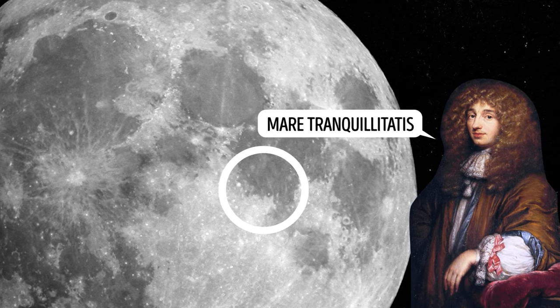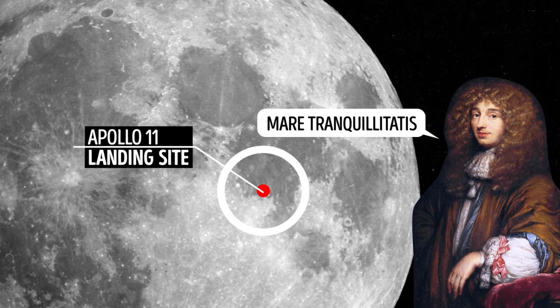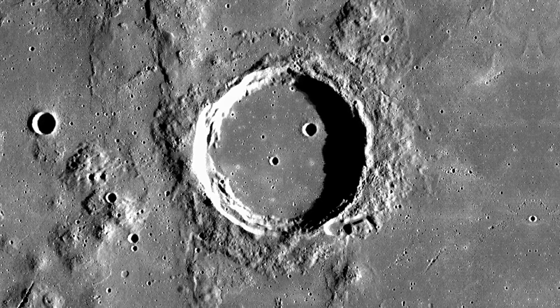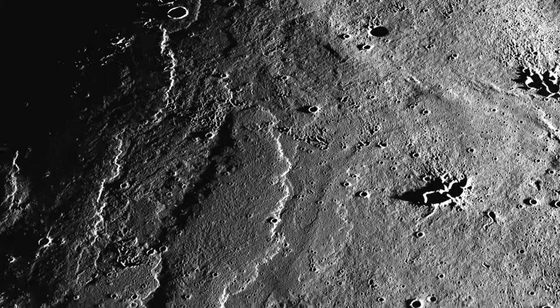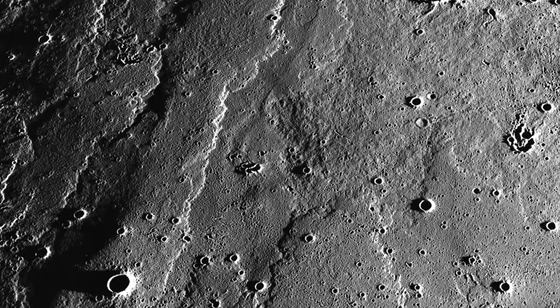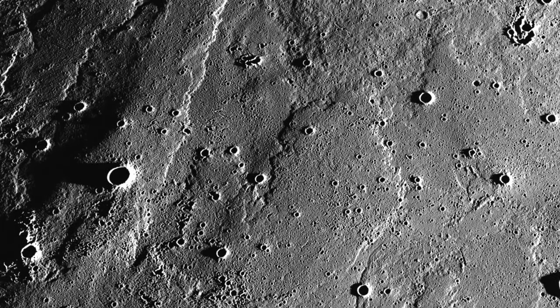For example, Mare Tranquillitatis translates to Sea of Tranquility, where Apollo 11 made its touchdown. But it seems those dark spots are not actually oceans. They are planes made of hardened lava that erupted long ago. These volcanic eruptions left behind smooth flat areas called basalt plains.